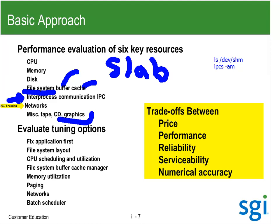When I've identified my problem, I sort out solutions. I want to fix the application first. File system layout is important — there are sites that will live with a poorly designed file system for years before they fix it. The problem with redesigning is service interruption for a day or two, plus all the overhead of moving data. After that, deal with the CPU scheduler and CPU sets, then get into the file system buffer cache. We're going to talk about sysctl parameters that are critical on a large memory UV: memory utilization, where did all the memory go, paging, TLB misses, swapping.